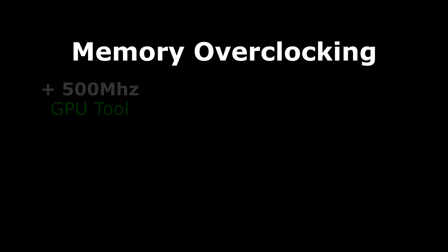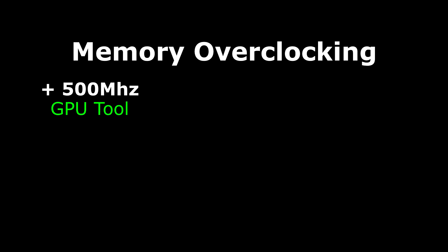The memory is where it gets confusing. When you increase your memory's frequency in the overclocking tool it's actually divided. So if you do plus 500 megahertz you're actually only adding 250 megahertz to the memory.